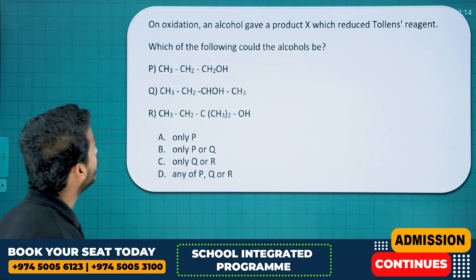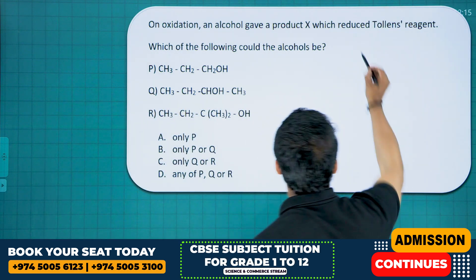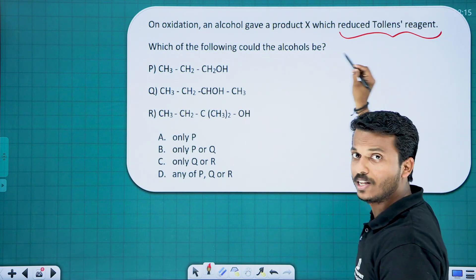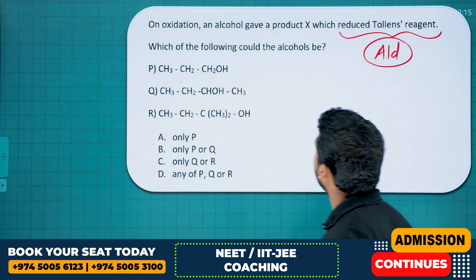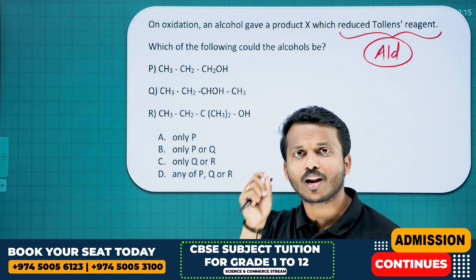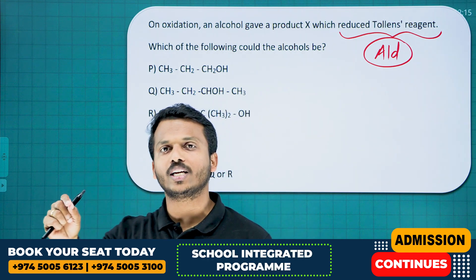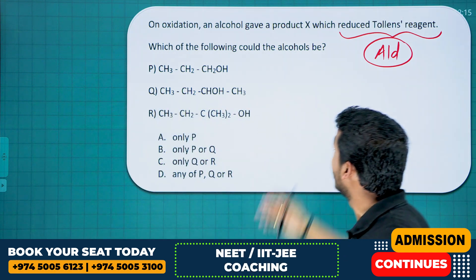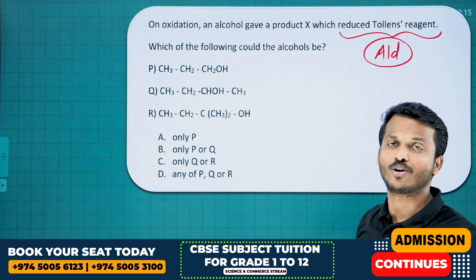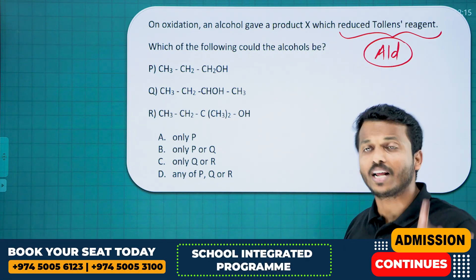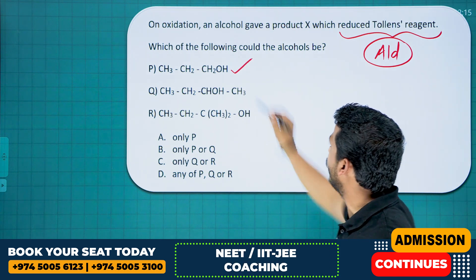Next: On oxidation, an alcohol gave product X which reduces Tollens' reagent. Reduces Tollens' reagent means it is an aldehyde. Which of the following could be the alcohol? Primary alcohol on oxidation gives aldehyde; secondary alcohol on oxidation gives ketone. They said after oxidation you get an aldehyde, so the alcohol must be primary. This primary alcohol will give you an aldehyde: CH3CH2CHO.